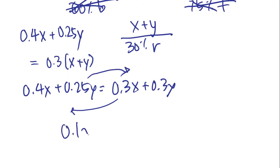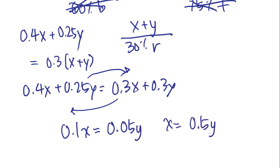Moving terms over gives us 0.1X equals 0.05Y, so now we know the ratio between the two mixtures. The original question asks what percent of the weight of the mixture is X, so we're looking for X over X plus Y, multiplied by 100.